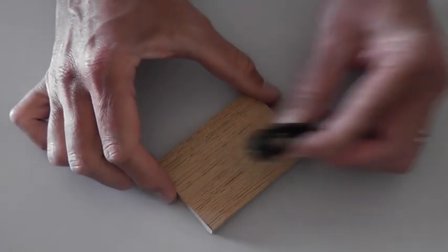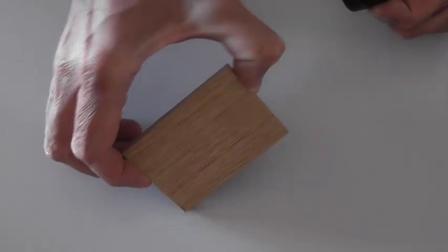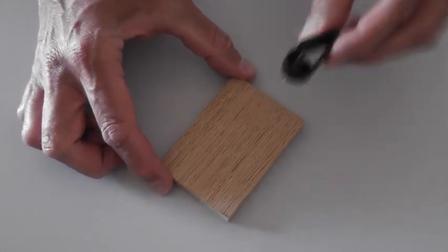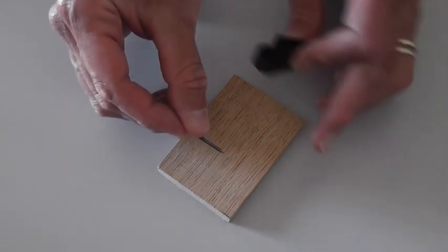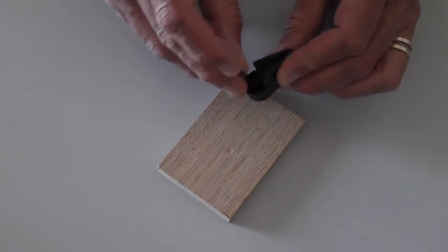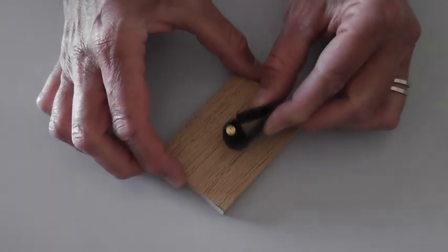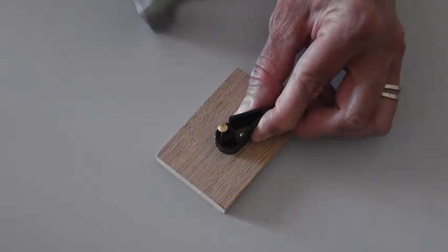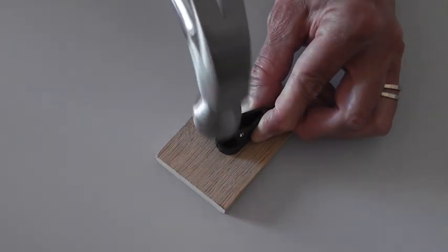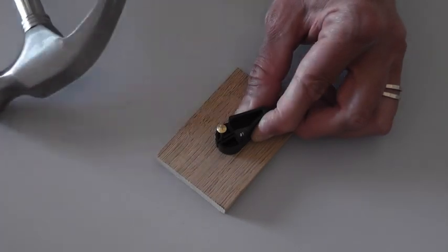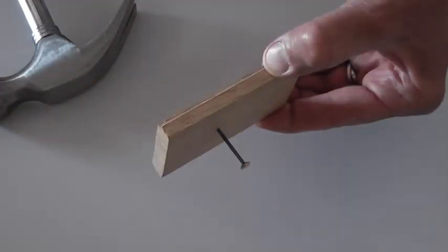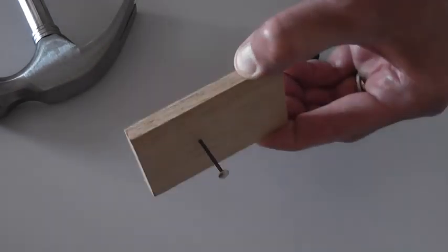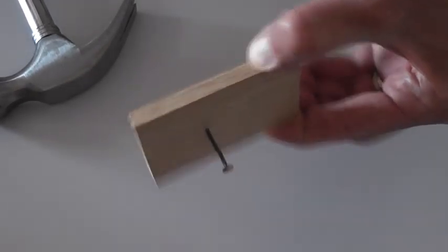And as you can see, I was not able to drive a nail through the piece of wood. So, let's try the opposite. Let's have the pointy side now towards the piece of wood, and let's see what happens in this case. And as you can see, in this case, it was very easy for me to drive a nail through the piece of wood.